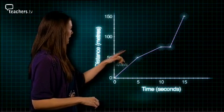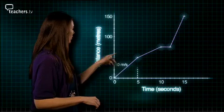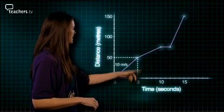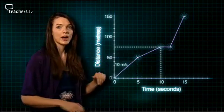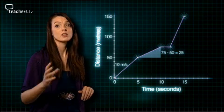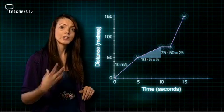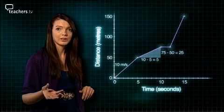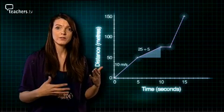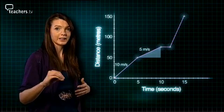The second leg starts at (5,50) and finishes at (10,75). So the distance travelled is 25 metres and the time taken is 5 seconds. The speed will be 25 divided by 5 — 5 metres per second.